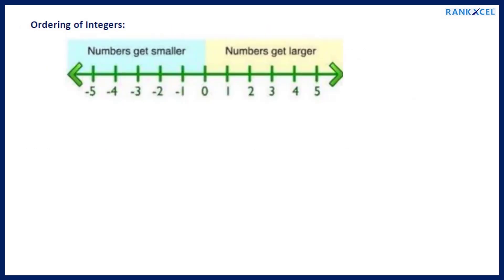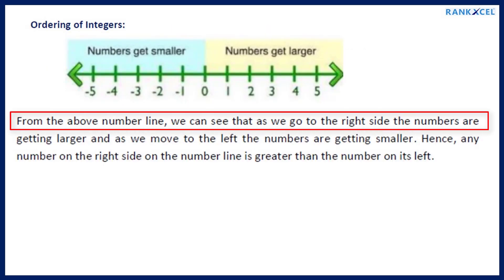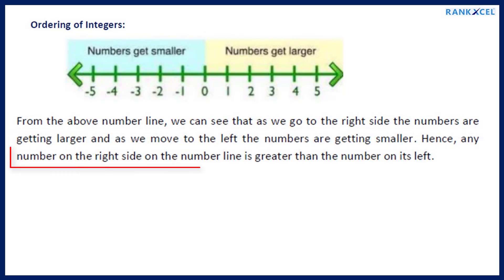Ordering of integers: From the number line, we can see that as we go to the right side the numbers are getting larger, and as we move to the left the numbers are getting smaller. Hence, any number on the right side of the number line is greater than the number on its left.